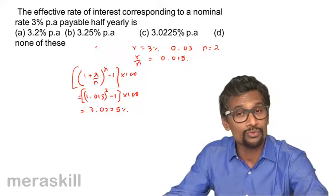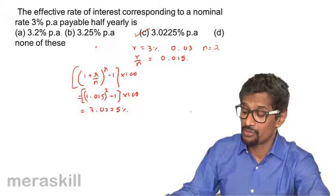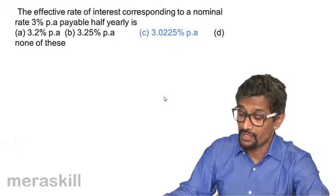So we get roughly 3.0225% per annum. That is, 3% per annum when you convert it to half yearly is equivalent to 3.0225% per annum. That is option number C.